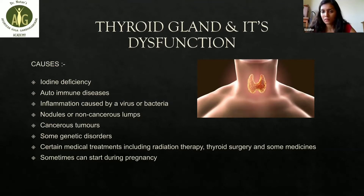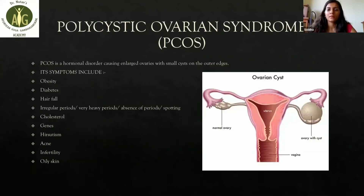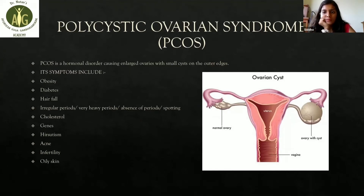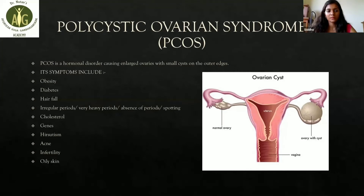Moving on to PCOS and its causes. PCOS is a hormonal disorder causing enlarged ovaries with small cysts on the outer edges, as you can see in the picture. The symptoms of PCOS include obesity, diabetes, hair fall, irregular periods, very heavy periods, absence of periods, spotting, high cholesterol, genetic factors, hirsutism (abnormal growth of hair on a woman's face and body), acne, infertility, and oily skin.